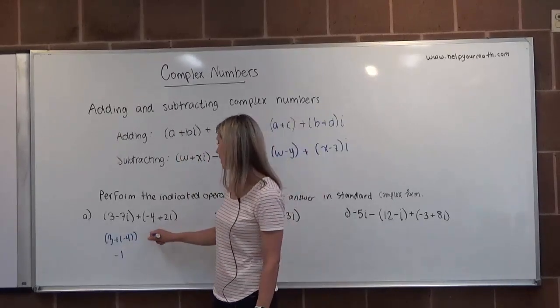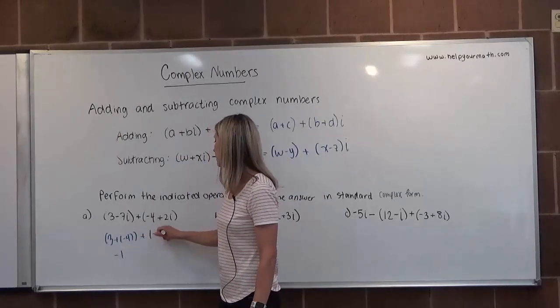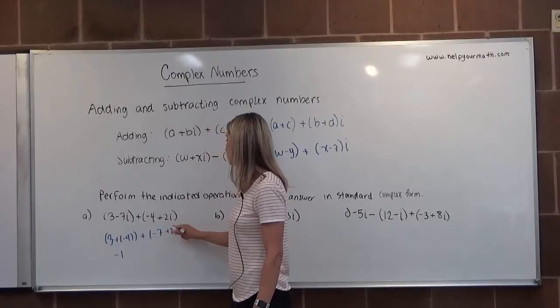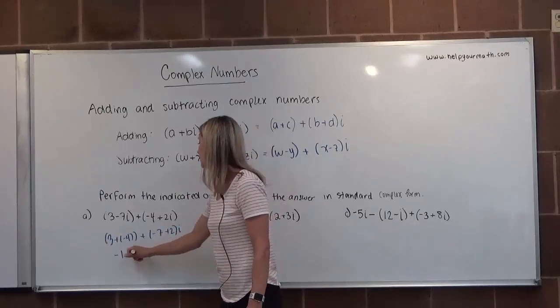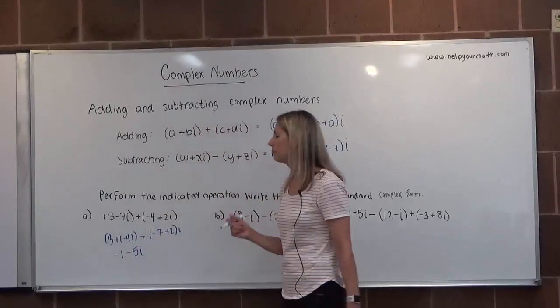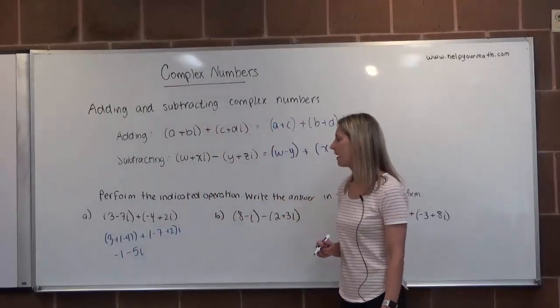Then we're going to add together the imaginary parts. That would be negative 7 plus 2I. Negative 7 plus 2 is minus 5. So our final answer would be negative 1 minus 5I.